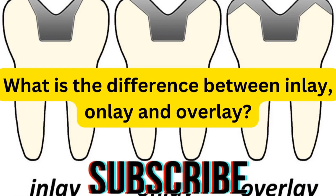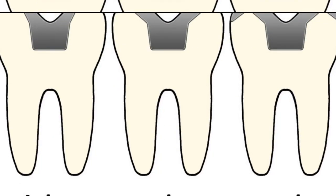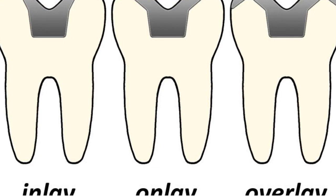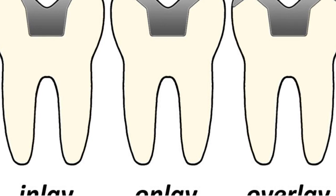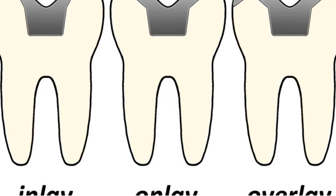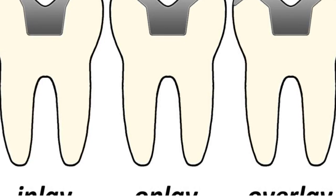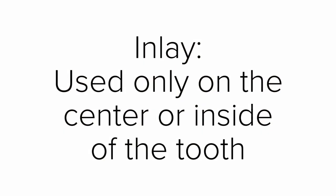Let's start with the inlay. As you can see, the inlay is inside the tooth — it does not cover the cusp of the tooth. So an inlay is only used on the center or inside the tooth and does not cover the cusps. For instance, for a Class 2 restoration, if the patient has a defective Class 2 filling, you remove it and you can place an inlay.